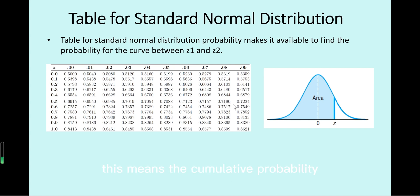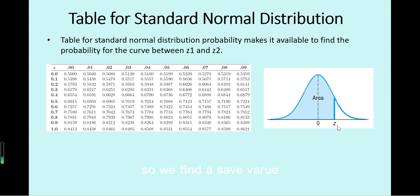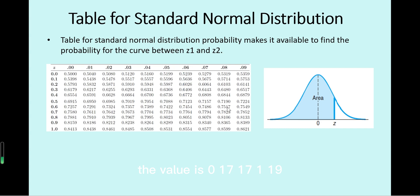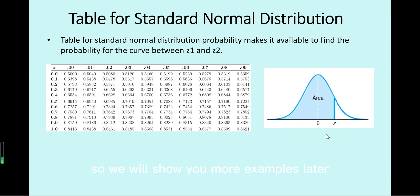This value represents the cumulative probability up to that z value in the normal density curve — the standard normal distribution with mean zero and standard deviation one. This is also called the quantile probability. For z = 0.58, the cumulative area is 0.7190. From different z values we can find different cumulative probabilities, and the difference between two cumulative probabilities gives the shaded area between two z values.